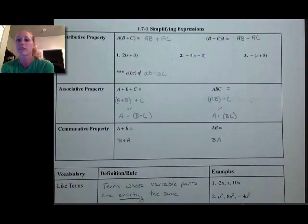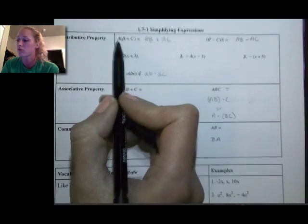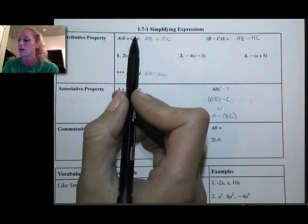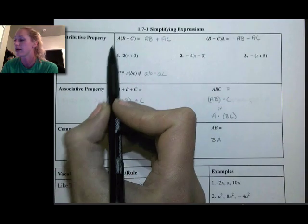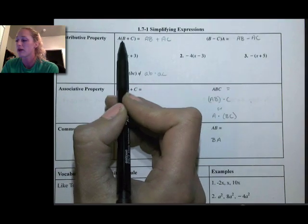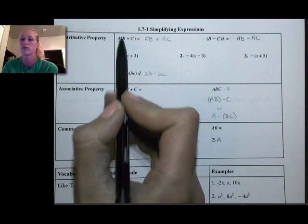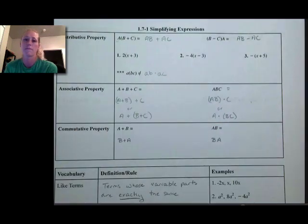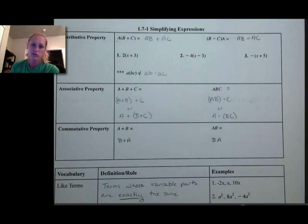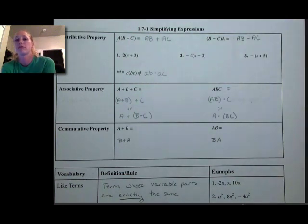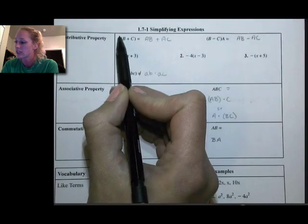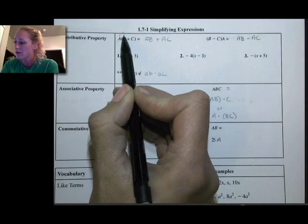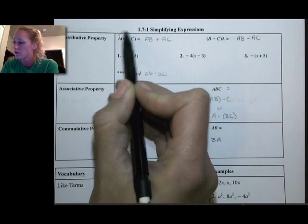The distributive property is when we have a value — it could be a variable — being multiplied by addition or subtraction within some parentheses. Normally in order of operations we do the parentheses first, but sometimes we might not be able to simplify what's in the parentheses. So we can use the distributive property, which says I can take that value out front and multiply by each piece.